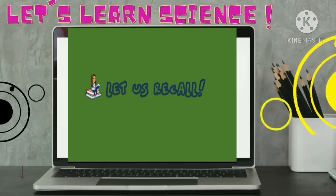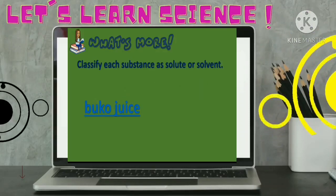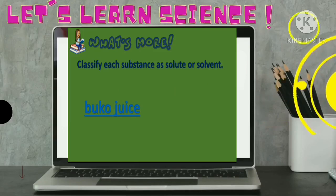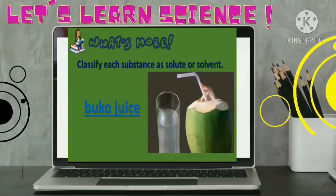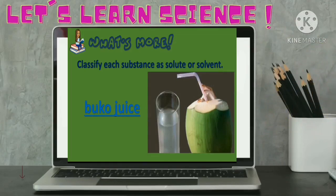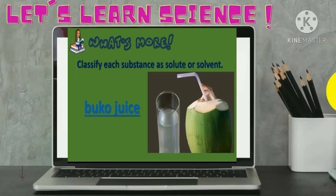Now, let us check what you have learned with our lesson by classifying each substance as solute or solvent. First is buka juice. Is it a solute or a solvent? Solvent. Let me hear you. Louder please. Well, you got it right. It's a solvent.